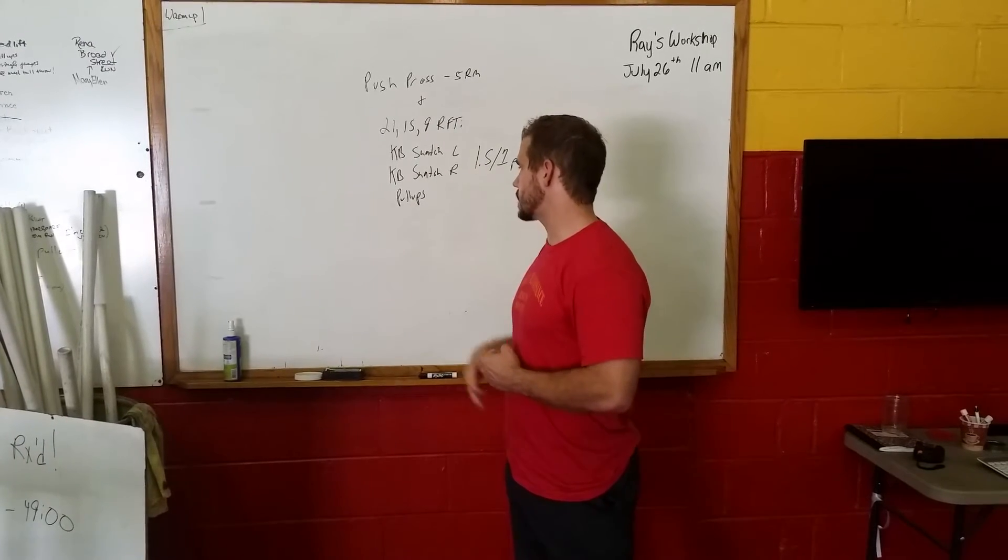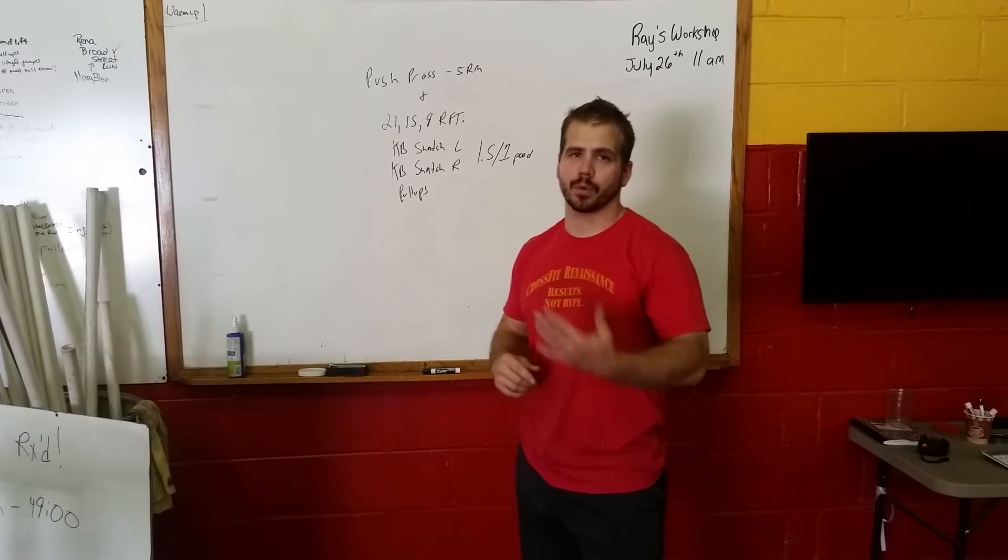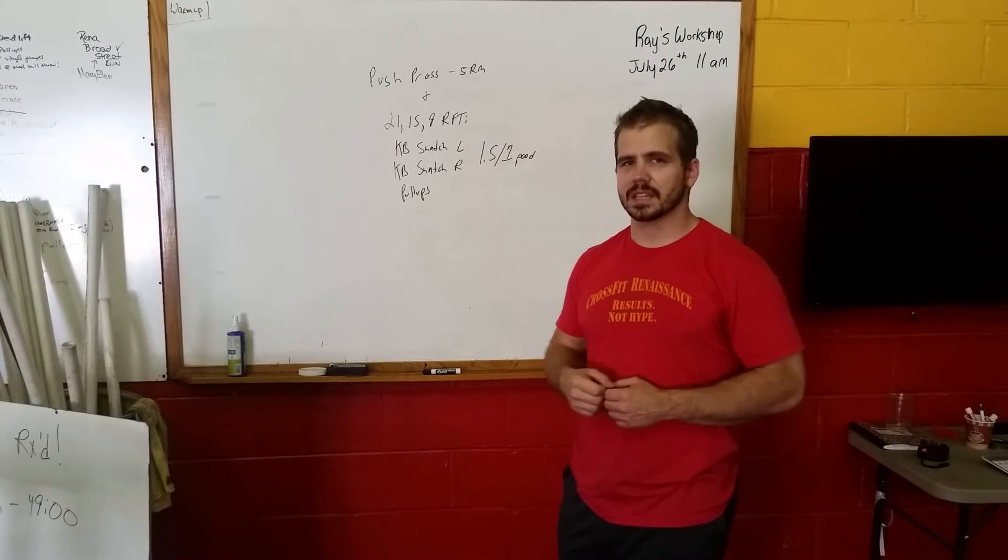Kettlebell snatch left, kettlebell snatch right, pull-ups at the end. 21-15-9, so 45 of the pull-ups, 90 of the snatches.